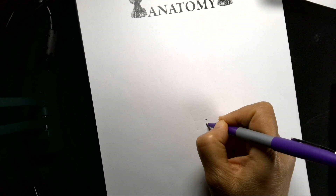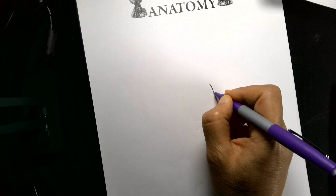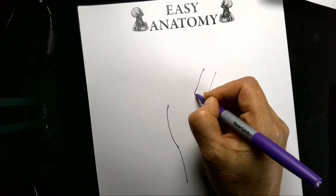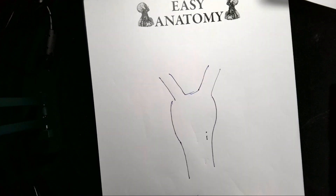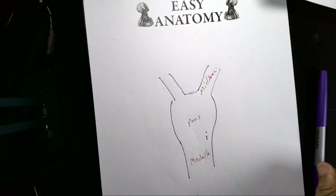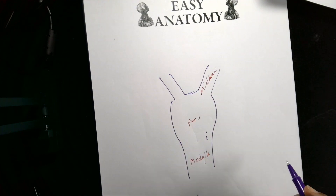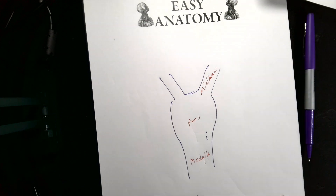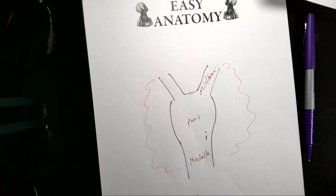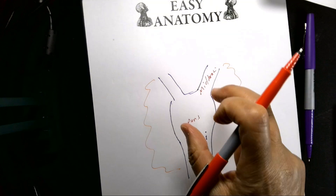We are done with general anatomy. We must remember that the brain stem is made of three parts: medulla, pons, and midbrain. These three parts of the brain stem are connected to the cerebellum. The cerebellum is supposed to cover the upper surface of the brain stem.